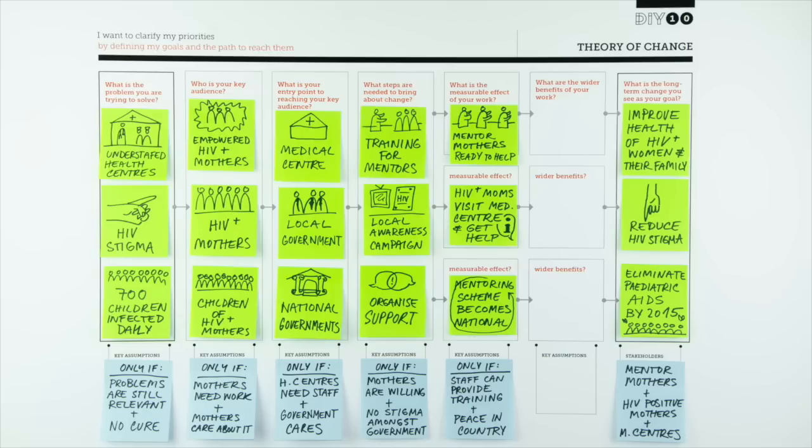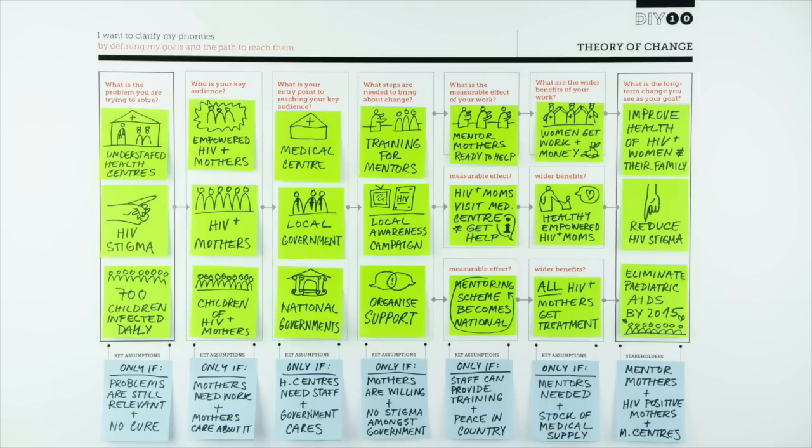Lastly, Danielle lists the key outcomes that her activity would lead to. These are the preconditions she needs to realize her goal.